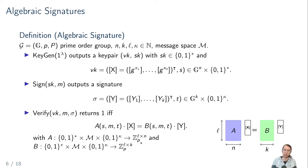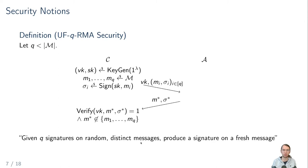Now that we have defined how our signatures look like, we also have to define what security we actually prove impossibility for. Since we want to prove an impossibility result, the weaker the notion, the better. So we won't use standard UF-CMA security, but UF-QRMA security. Intuitively, this just says that an adversary gets Q signatures on random messages along with the verification key, is not allowed to make any signature queries on chosen messages, and in the end has to produce a forgery which cannot be contained in the messages it received. Obviously, this is weaker than standard UF-CMA security, so if we show that even this is impossible, this also implies that UF-CMA security is impossible, making our result only stronger.